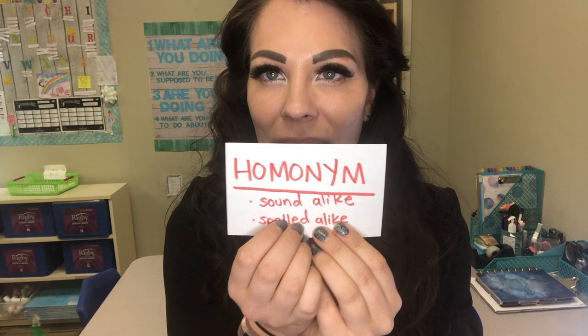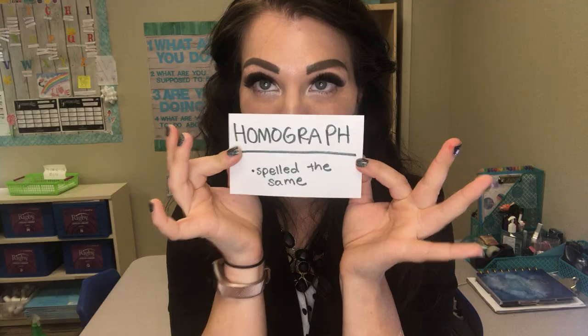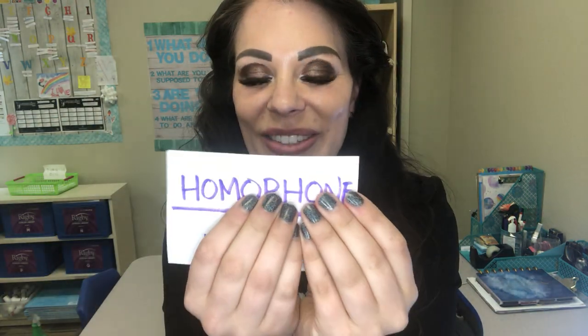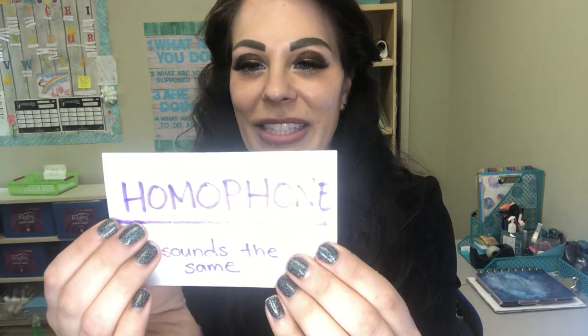Let's review. Homonym — think of 'synonym,' they both end the same way — same sound, same spelling. Homonym has the most things in common. Homograph — like a grapheme, written words — spelled the same but sound differently. Homophone — 'phone,' they sound the same but are spelled differently, like 'flower' and 'flour.'